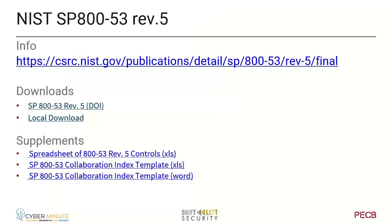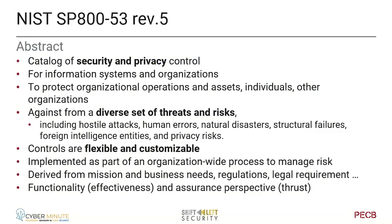If you're ready for a deep dive, the documents are available for free download on the NIST webpage. You can even download additional supplements like an Excel sheet with a full list of controls, or an index template in Word or Excel. The SP 800-53 revision 5 is, in fact, a catalog of security and privacy controls — the two are important. I think the main reason NIST did this is that they don't have, like in Europe, the global-level legislation like GDPR. So they looked at GDPR and said: if you want to have everything in place, we need to include that in our procedures.